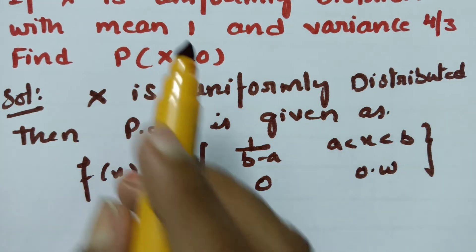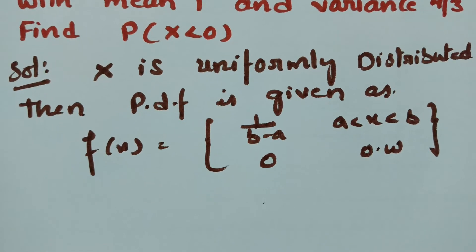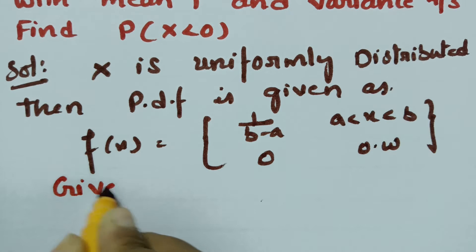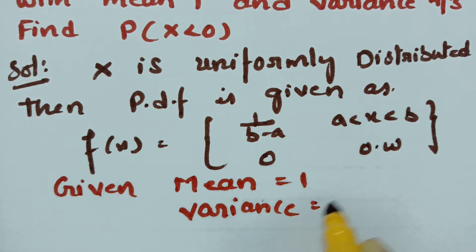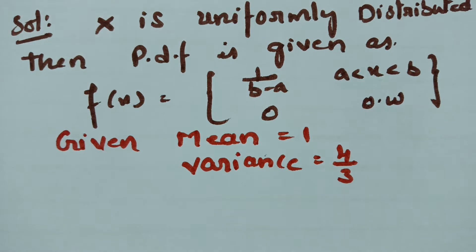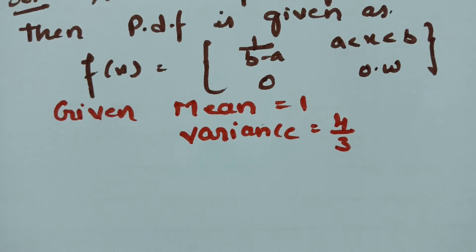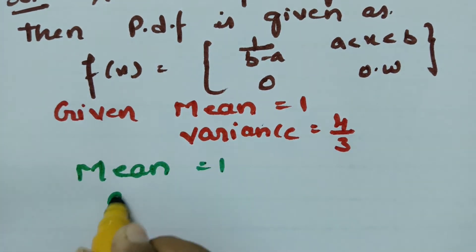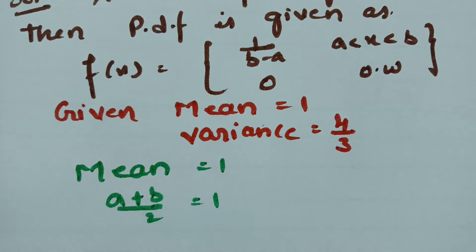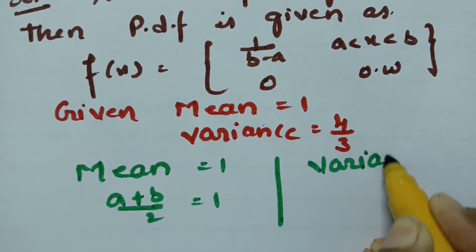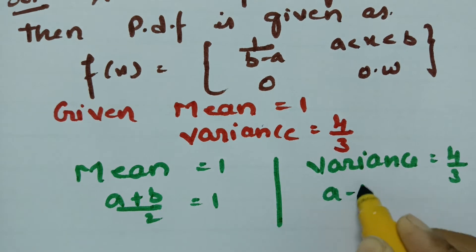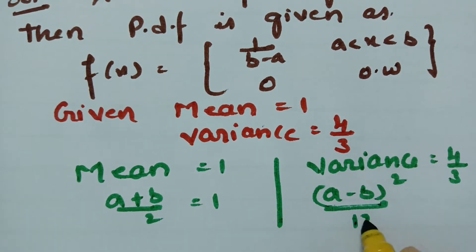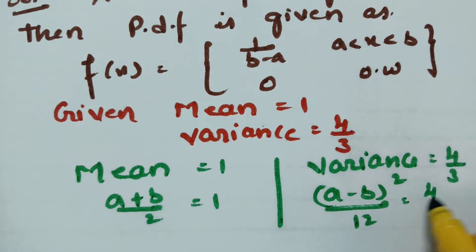Mean is given as 1 and variance as 4/3. According to uniform distribution, the mean formula is (a + b)/2 = 1. For variance, the formula is (a − b)²/12 = 4/3. I have made a video showing how these formulas are derived.